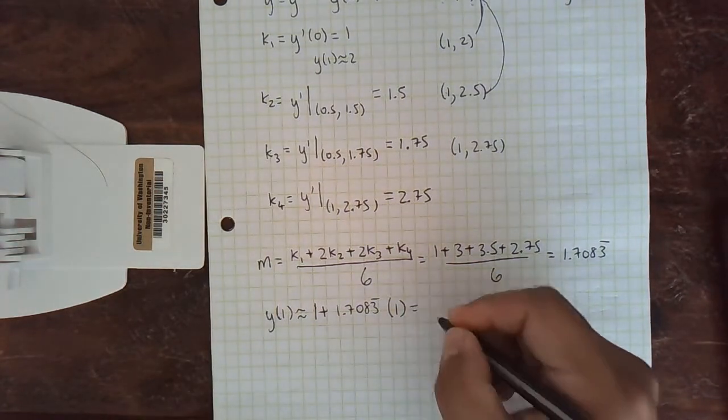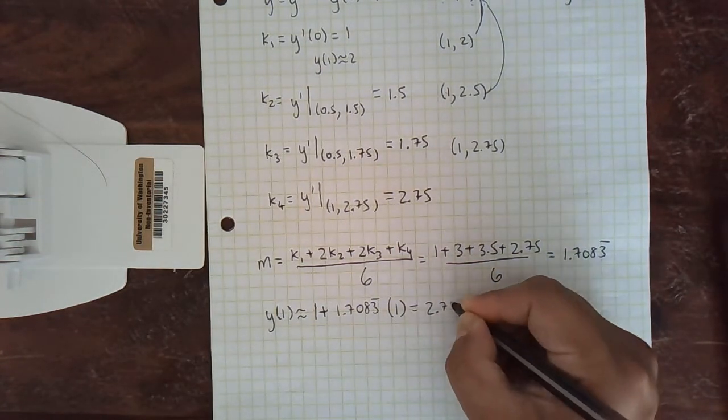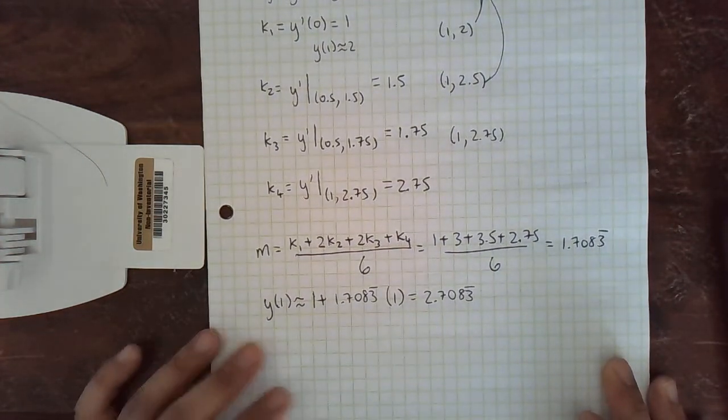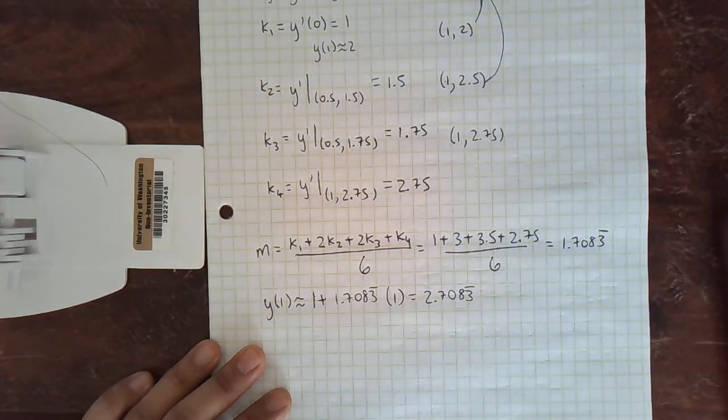So that's the amount I walk by, and I get 2.7083 repeating. And we can truncate if we don't want all the decimals. We probably don't because this is an approximation. And let's compare.